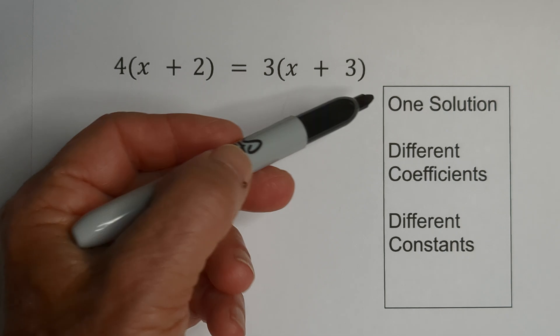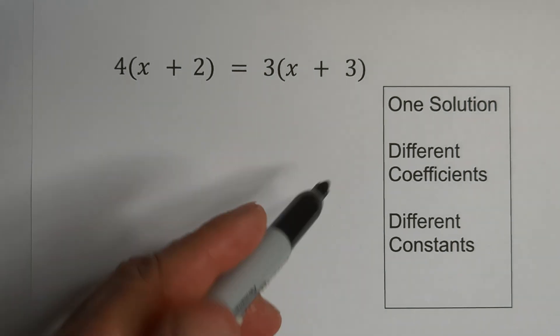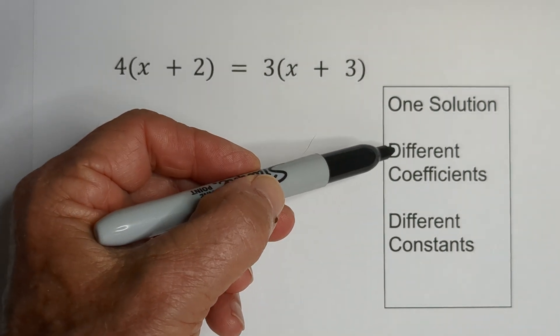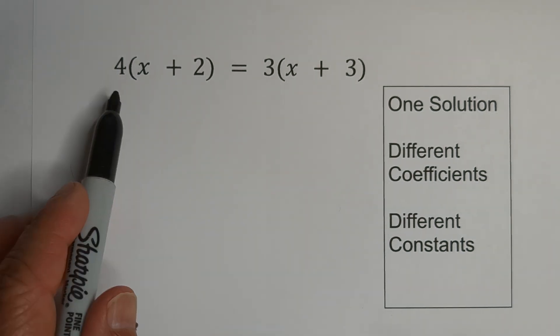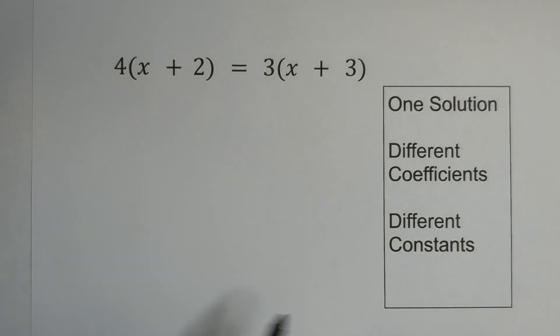This first example is one solution, and basically you're going to have different coefficients and different constants. So let's look at this example. First we need to distribute.